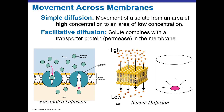Now let's talk about movement across a membrane. Simple diffusion — you can think of this as taking a dye pellet and dropping it into a beaker of water. The dye diffuses away from the pellet as it dissolves. This is simple diffusion, where the dye follows its concentration gradient from an area of high concentration to an area of low concentration. Everything naturally goes from high to low concentration.